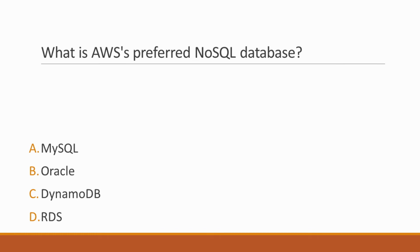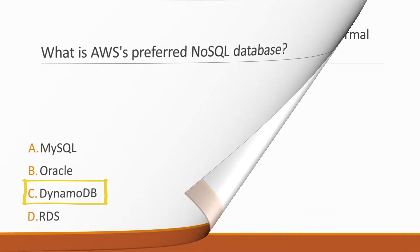Next question: What is AWS's preferred NoSQL database? Options: A. MySQL, B. Oracle, C. DynamoDB, D. RDS. Correct answer is option C, DynamoDB, because Amazon DynamoDB is a key-value and document database that delivers single-digit millisecond performance at any scale. It's a fully managed, multi-region, multi-master database with built-in security, backup and restore, and in-memory caching for internet-scale applications.